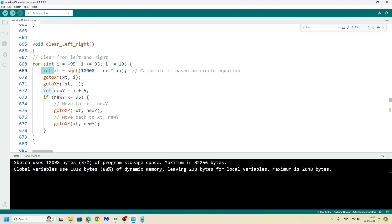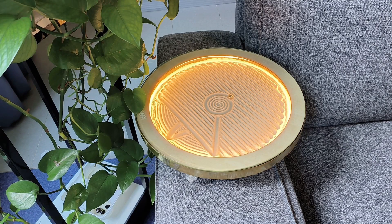I can just use the square root of 10,000 minus, in this case, i times i squared, which is the y variable. There we go, we can graph it. Instead of doing a wiper, you can just make a circle pattern.